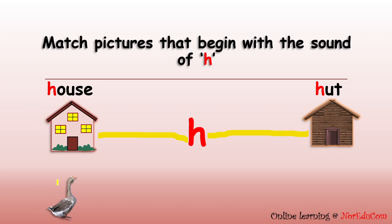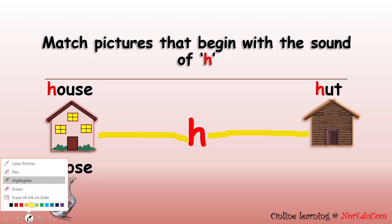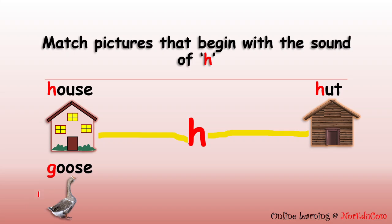Can you name this animal? Yes, this is a goose. Gah, gah, goose. It starts with the sound of G — letter G, not letter H. So do not match it. Let's cross it out.